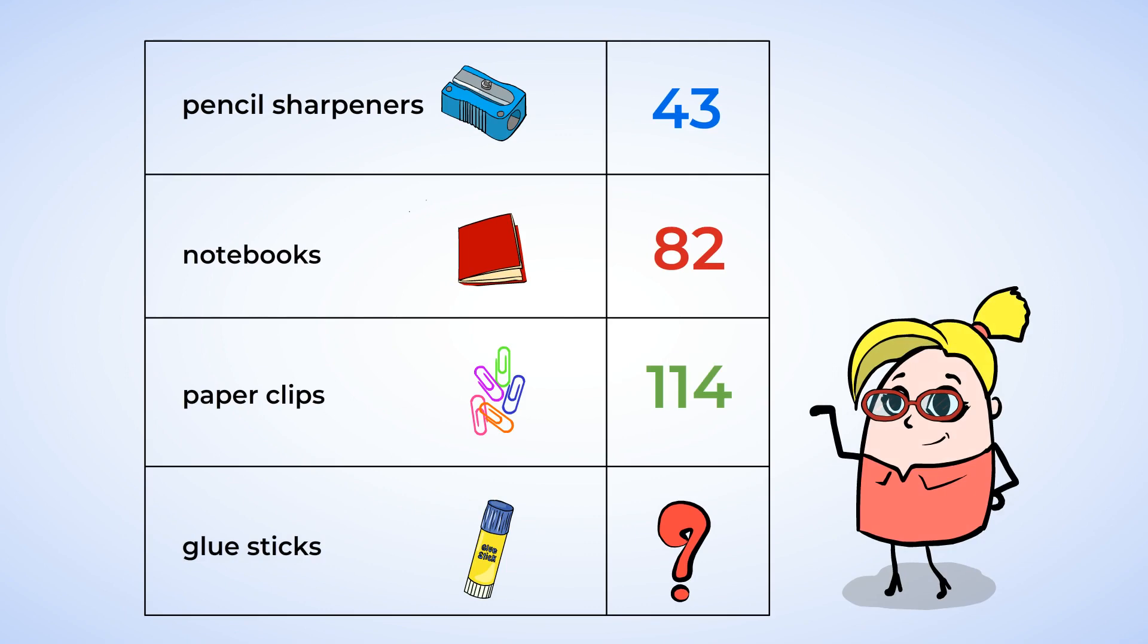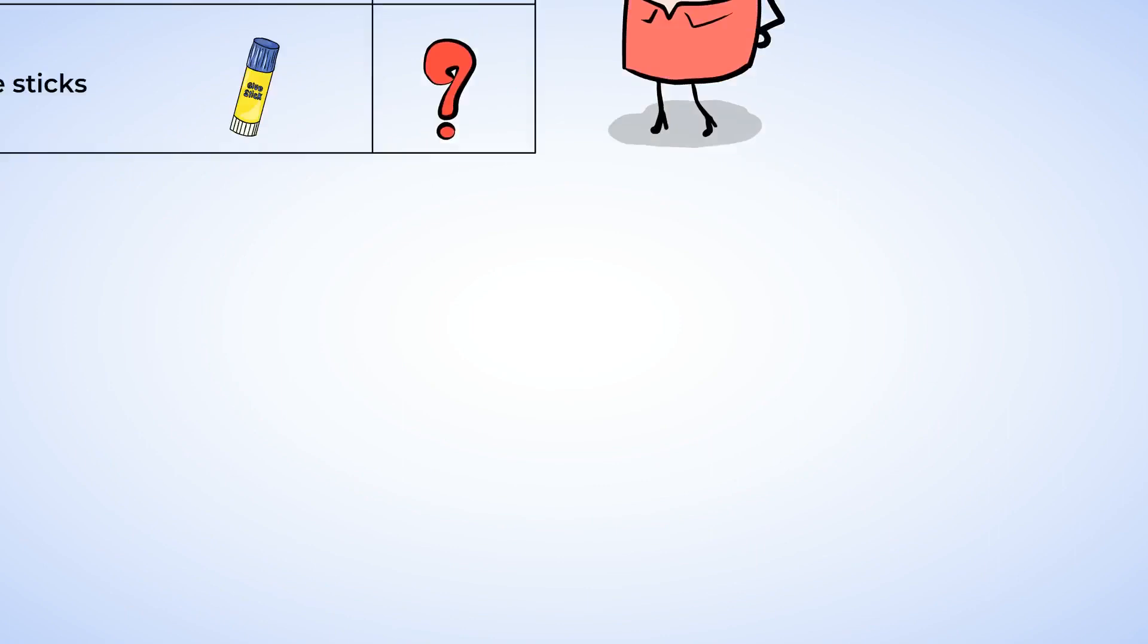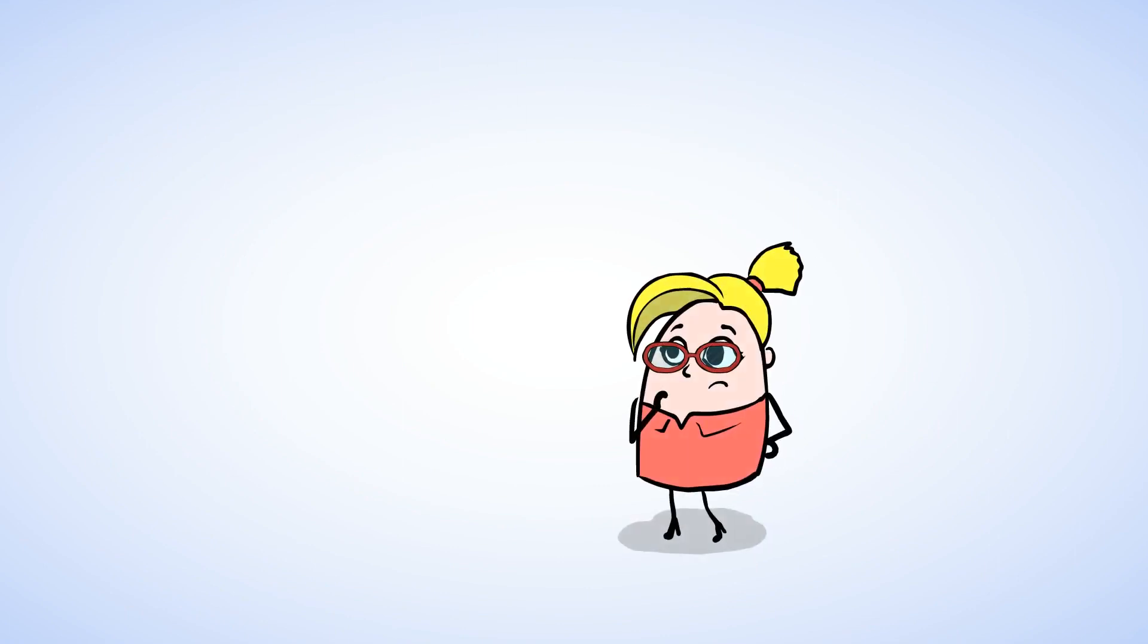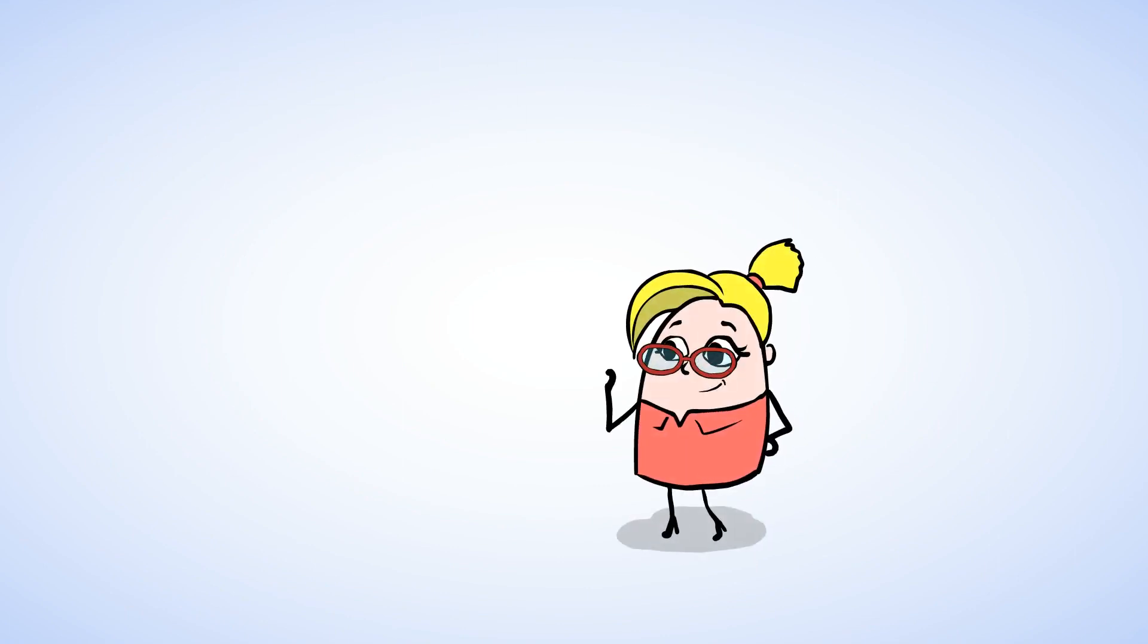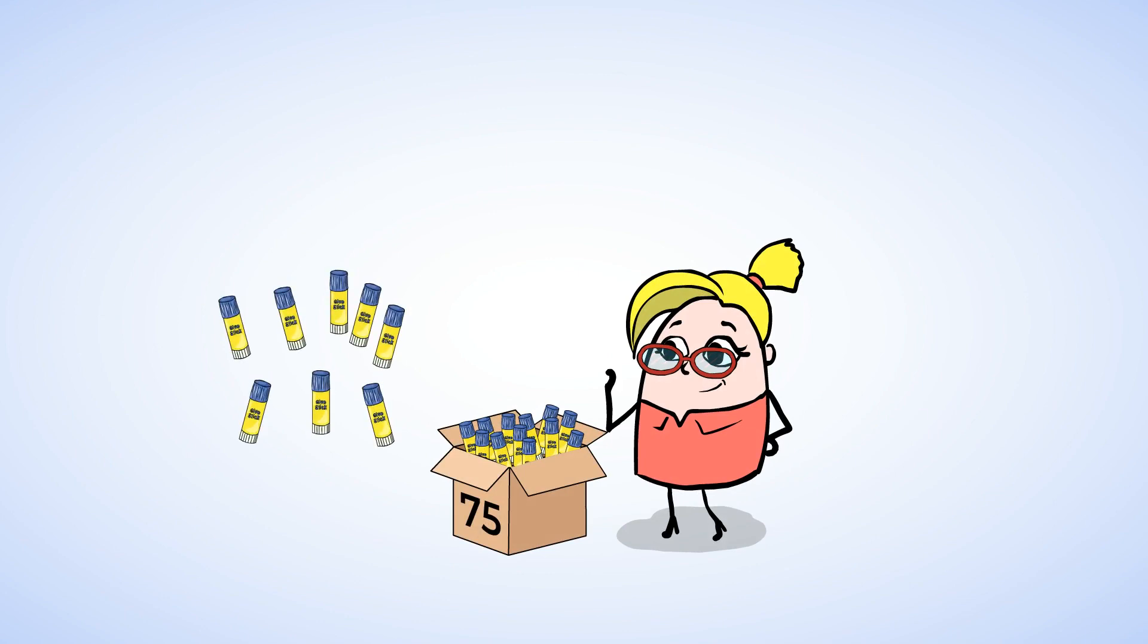You're doing such a great job. And there's only one more item to count. Ah, too bad. Oh, but they're glue sticks. Awesome. This box already has a number on it. It says 75, but there are a few glue sticks outside of the box. Well, let's count by ones, starting from 75.